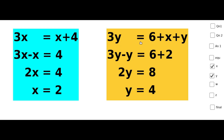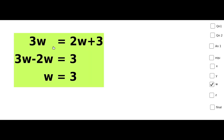From the second equation: 3y = 6+x+y. Taking y to the left side: 3y-y = 6+x. Since x = 2, we get 2y = 6+2 = 8, therefore y = 4. From 3w = 2w+3: 3w-2w = 3, therefore w = 3.